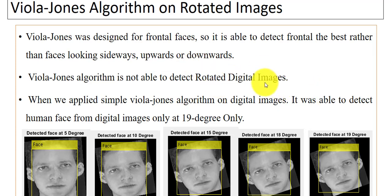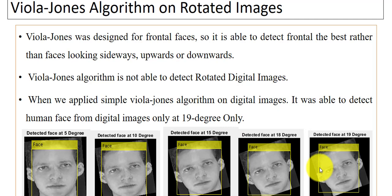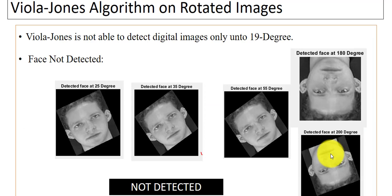Using simple Viola-Jones, you can only detect the human face up to 90 degrees. As you can see in the results, using this algorithm without any image processing operation, we can successfully detect the human face up to 90 degrees only. Our task here is to rotate the digital image at different angles and detect faces, since this algorithm is not able to detect the human face at different angles of rotation.